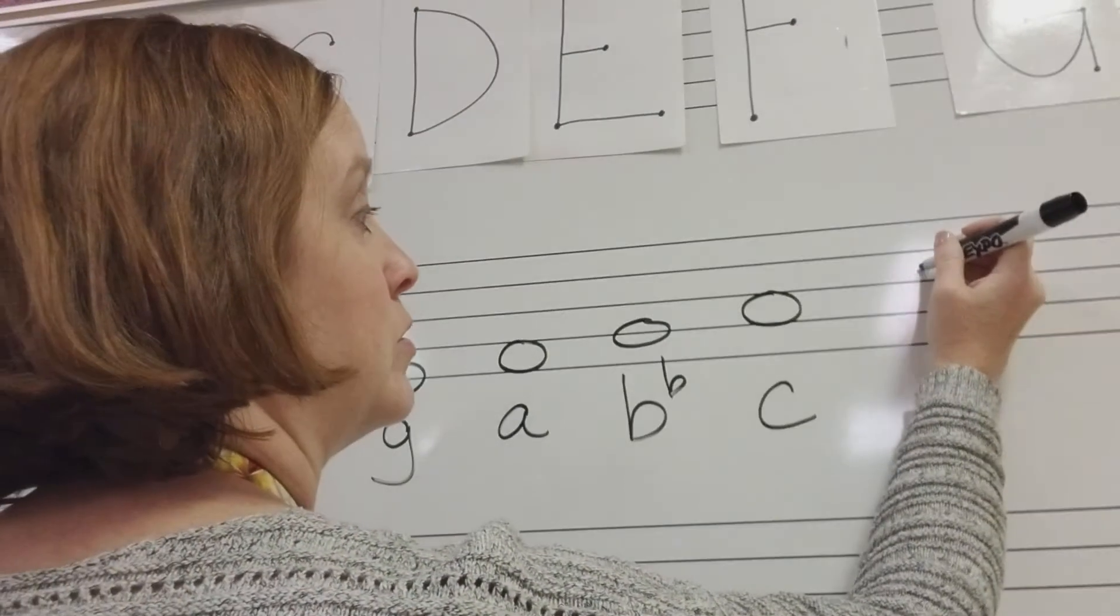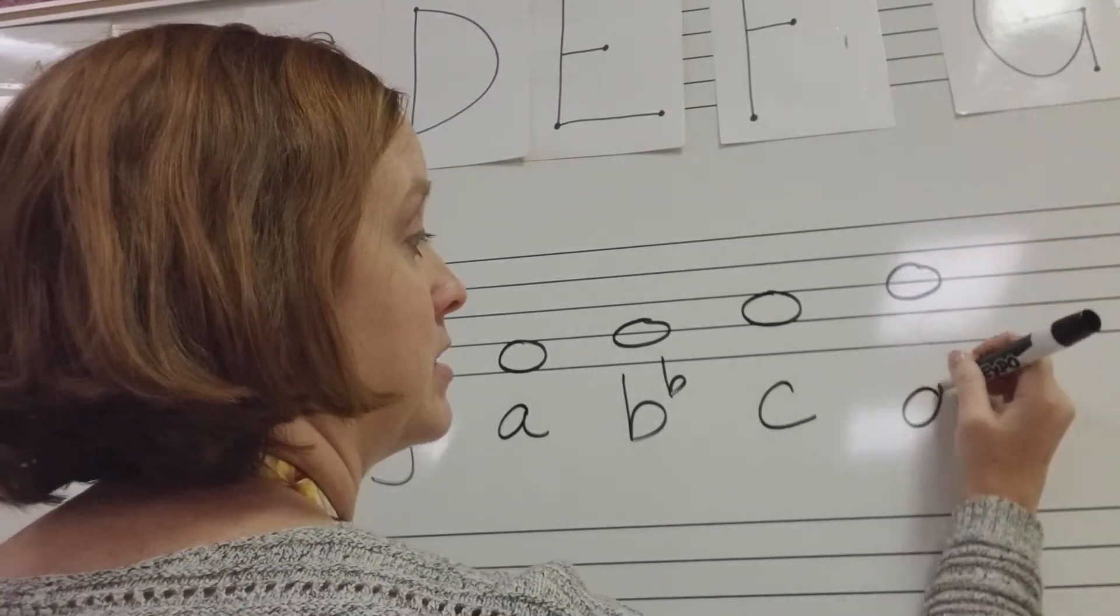Next second space, I'm going to draw my note. And I know C is next. Now we're going to go to the third line. And that is our D.